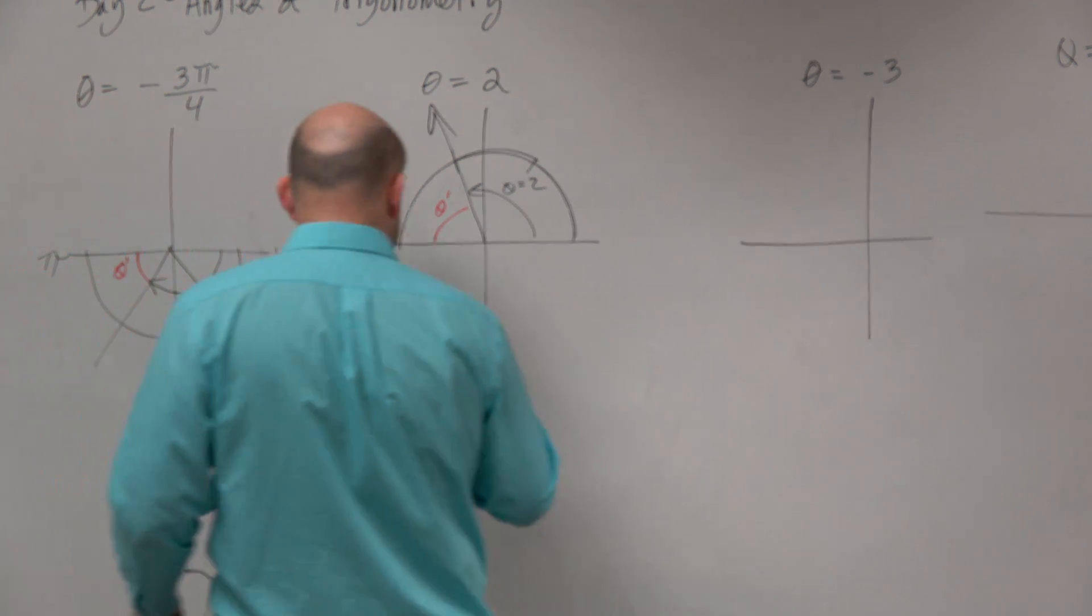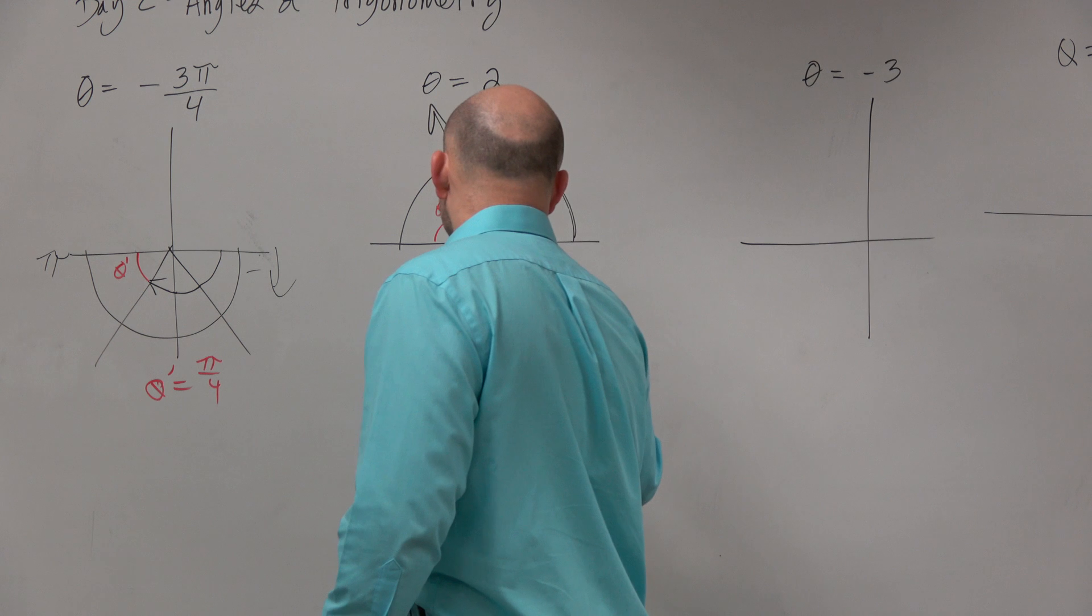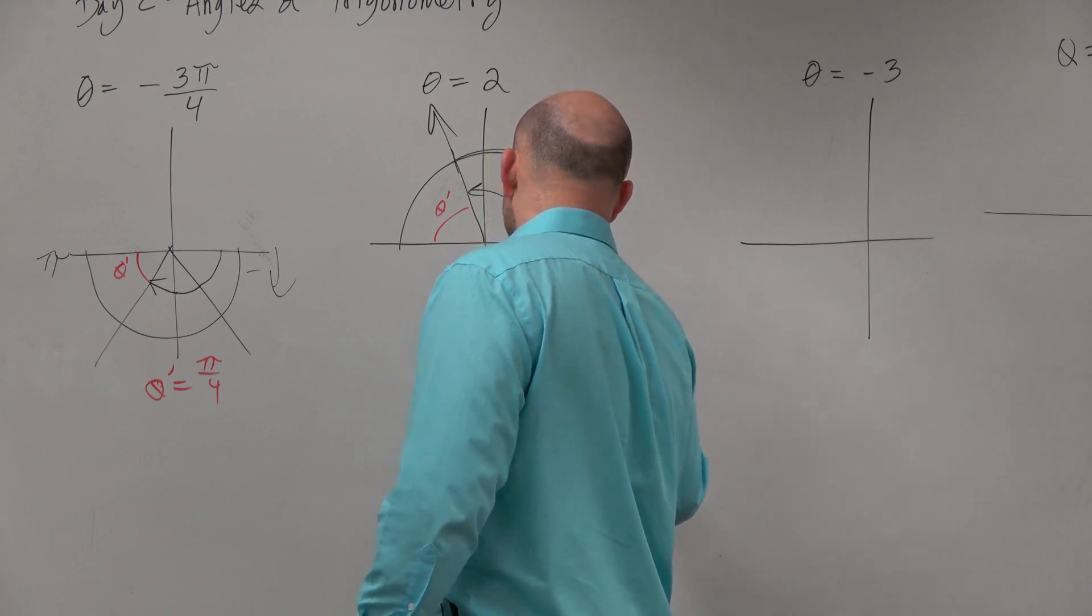So we can write an equation. We can say theta prime plus 2 equals pi.